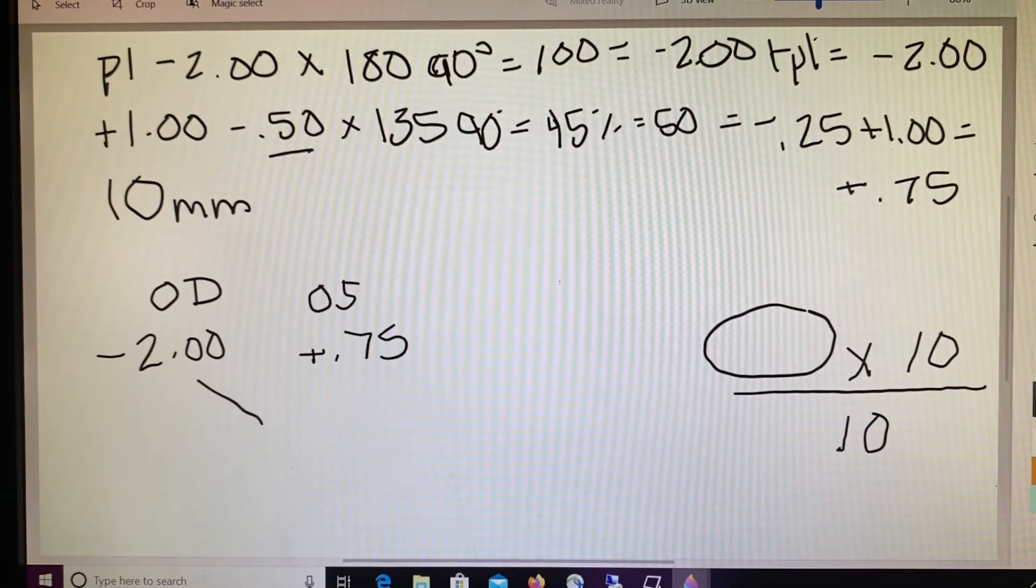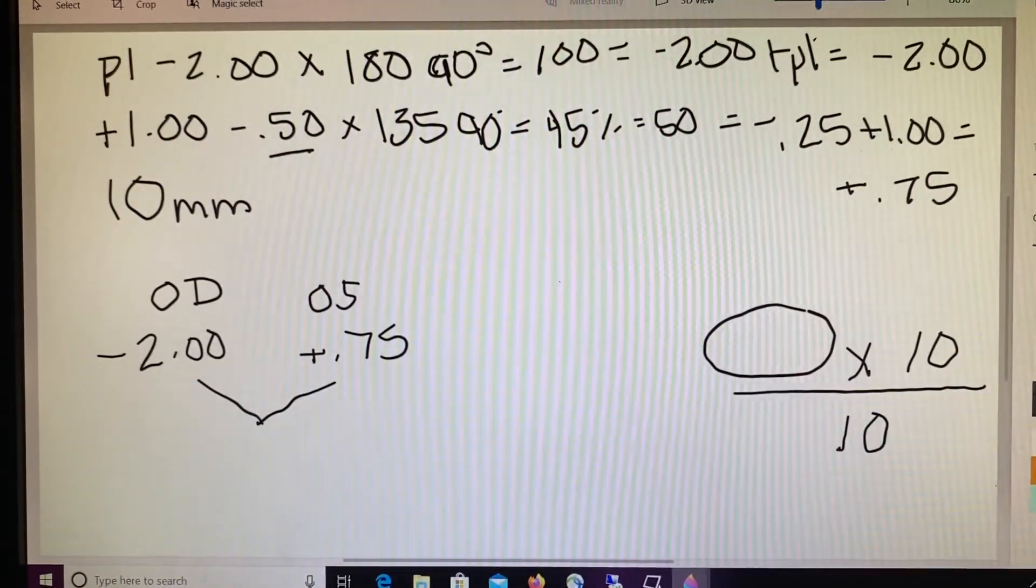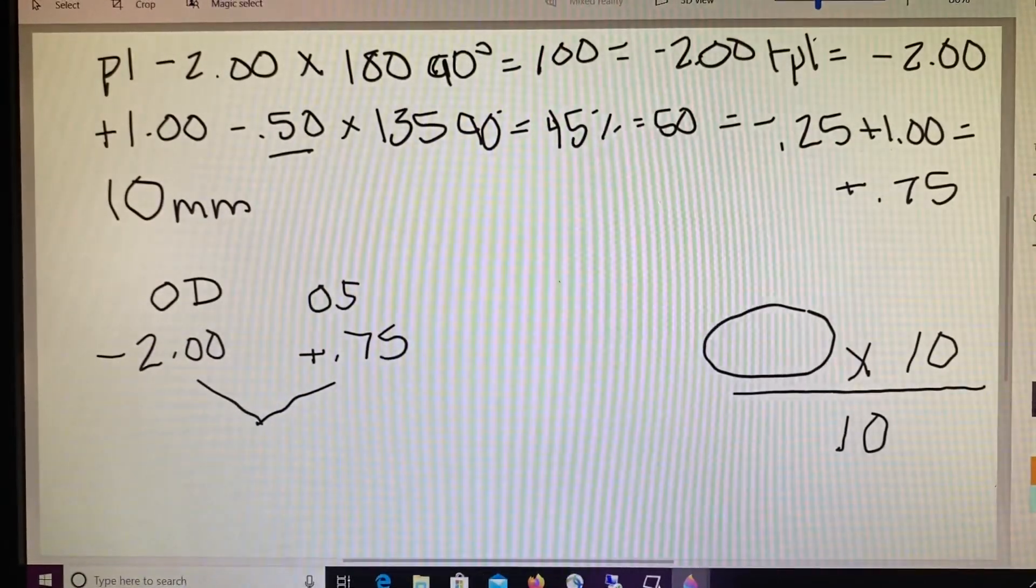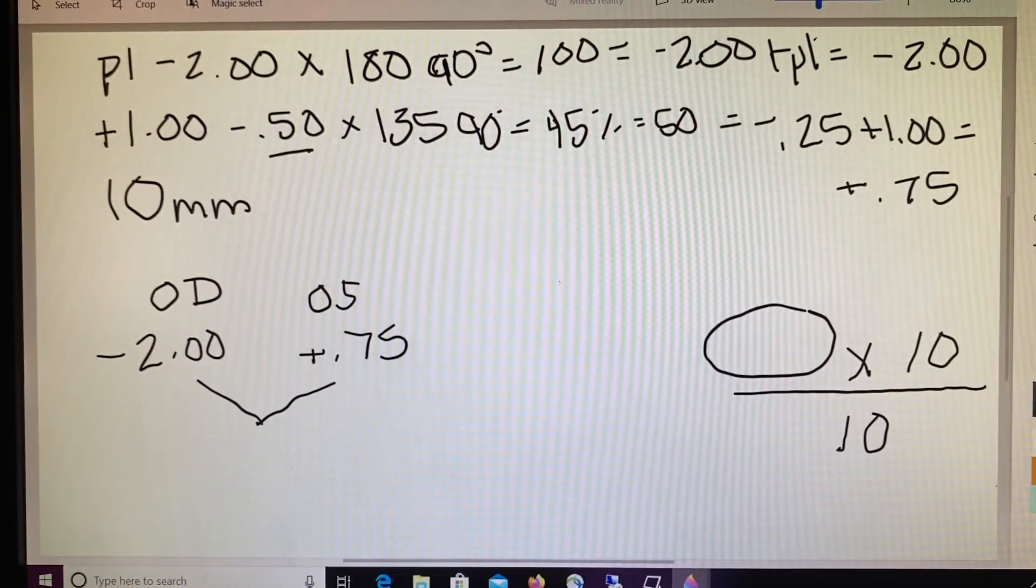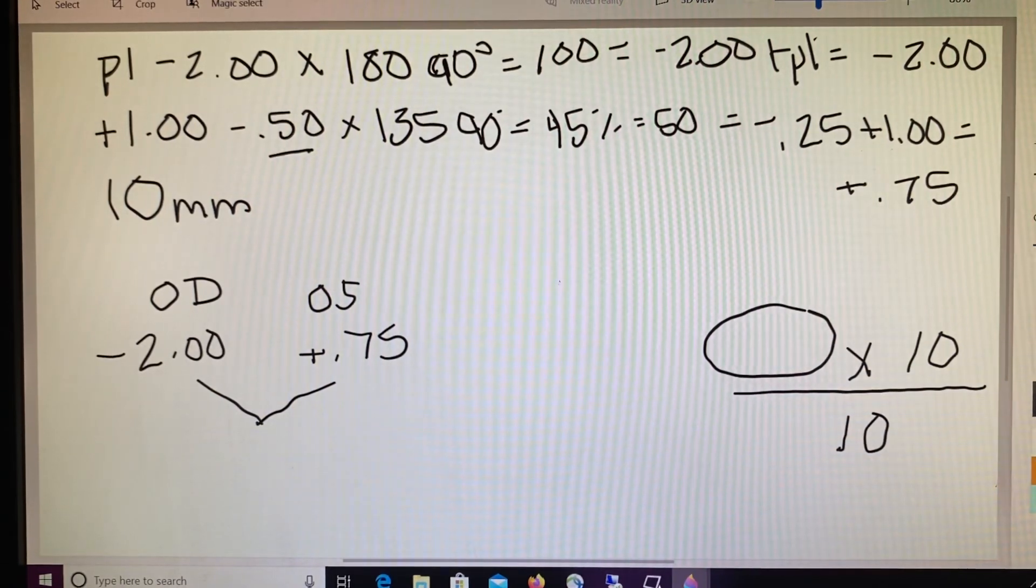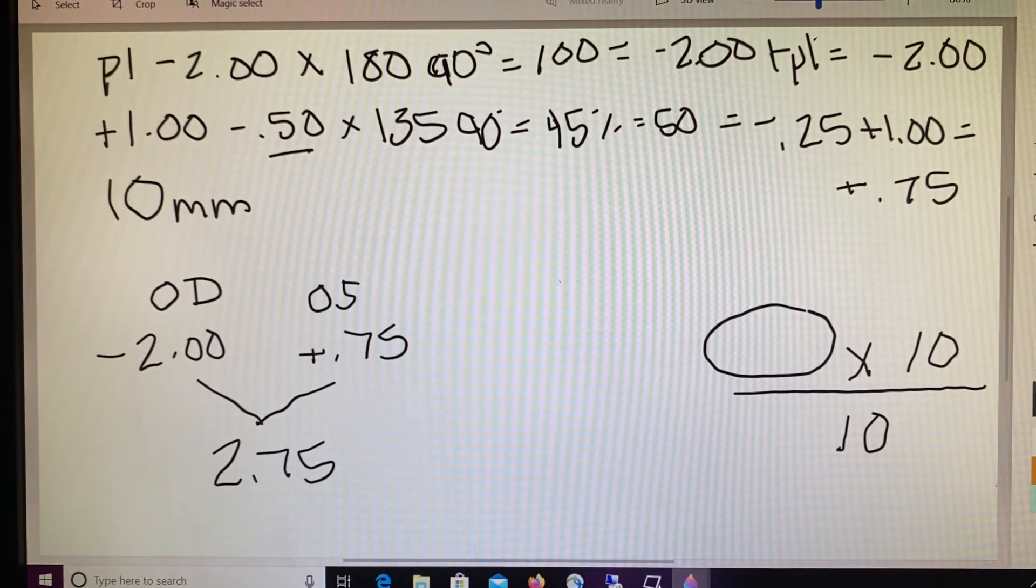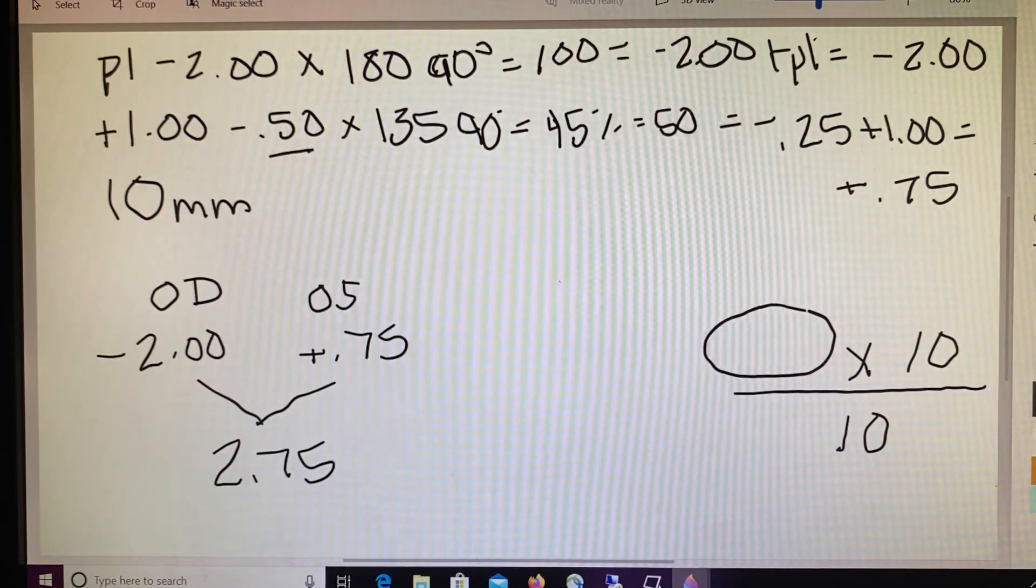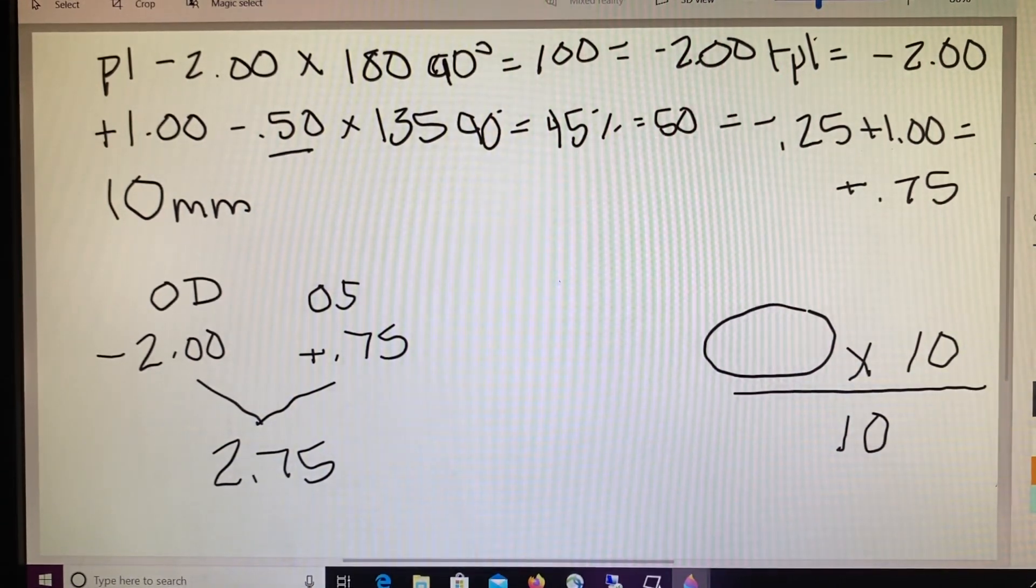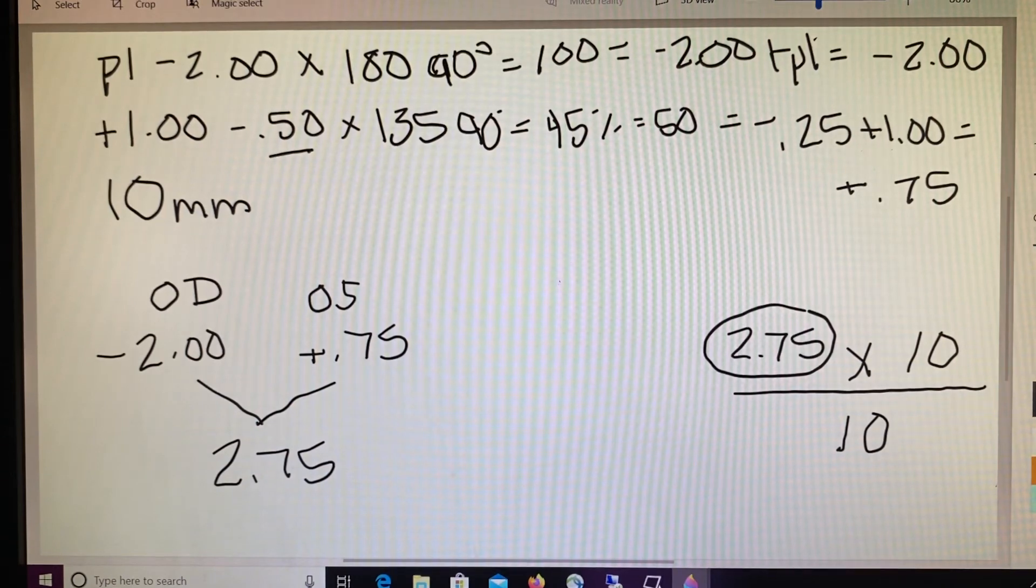Now we've just got to figure out the next step here, which is how far or how imbalanced is our patient. So the difference between a minus 2 and a plus 0.75. Again, thinking about that on the power wheel, how far would we have to travel? We'd actually be traveling 2.75 diopters between the right and left side of our patient. So we get to plug that 2.75 into our Prentice rule. So 2.75 times 10 divided by 10, we get an answer of 2.75.